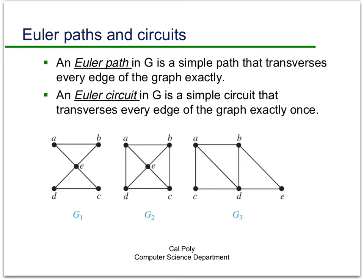Before we talk about the full solution, two more definitions. We could have an Euler path, which would be a simple path that traverses every edge of the graph exactly once. They might begin and end at different vertices.